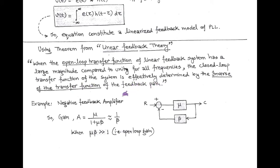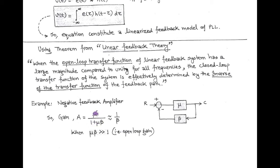To explain this, consider a negative feedback amplifier with μ as the forward path transfer function and β as the feedback path transfer function. The gain is A = μ/(1 + μβ). According to linear feedback theory, when the open loop transfer function μβ is much greater than 1, the approximate gain is 1/β, because 1 is neglected compared to μβ, μ cancels, and we are left with the inverse of the feedback path transfer function, 1/β.